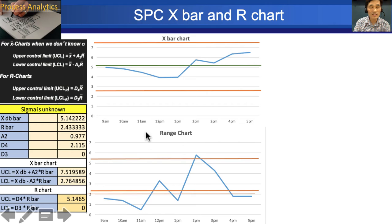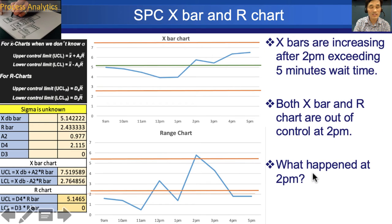However, when you look at the range chart, we find that we have this upper control limit and lower control limit as 5.14 and 0. And we see that a lot of them are going beyond what we saw. So at least this point is not good. So something happened at 2pm. And it went beyond the control.